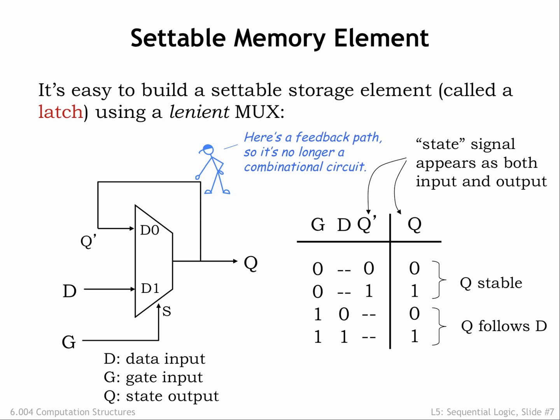When the gate input is high, the MUX's output is determined by the value of the D1 input — in other words, the data input of the memory component. Looking at the truth table, we see that when G is 1, the Q output follows the D input.